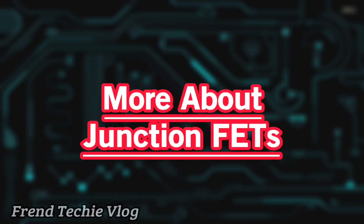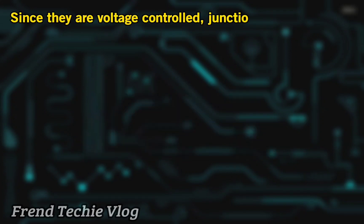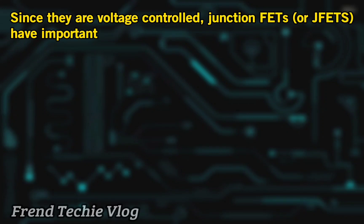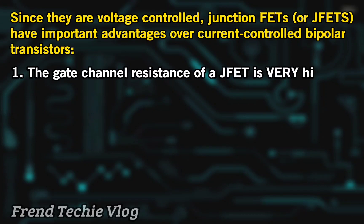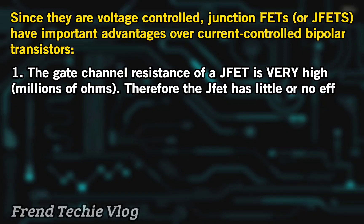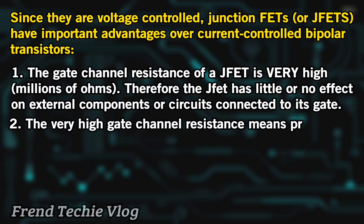Since they are voltage controlled, Junction FETs, or JFETs, have important advantages over current-controlled bipolar transistors. First, the gate channel resistance of a JFET is very high — millions of ohms. Therefore the JFET has little or no effect on external components or circuits connected to its gate. The very high gate channel resistance means practically no current flows in the gate circuit.